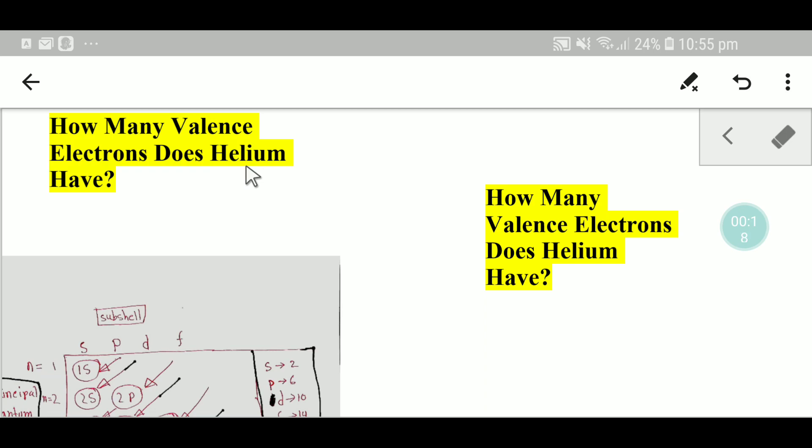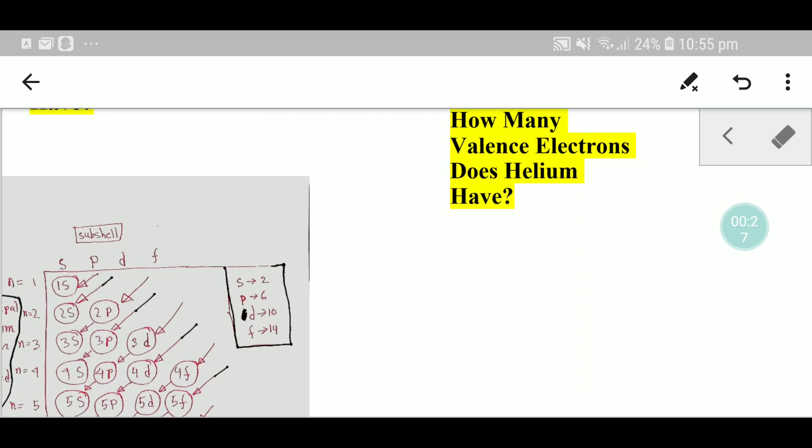I will highly request you to read that blog post after watching this video. So let's get started. From the periodic table we see that the symbol for helium is He and its atomic number is 2. This means that you have 2 electrons and 2 protons.